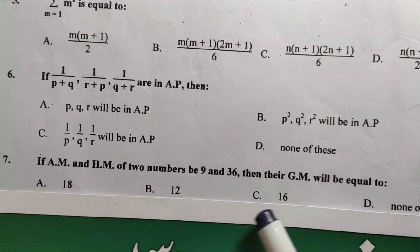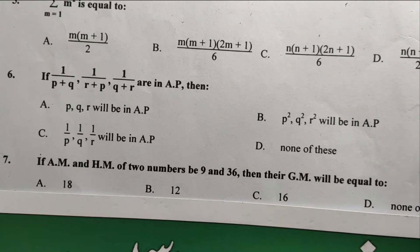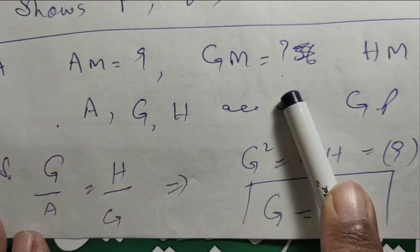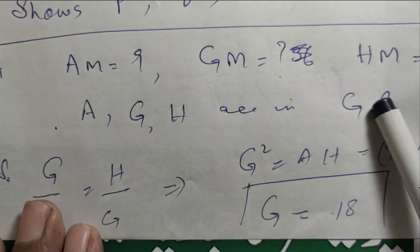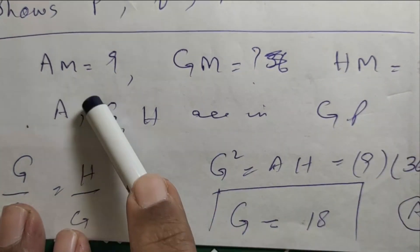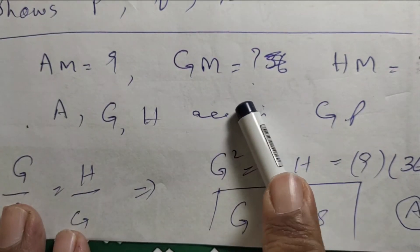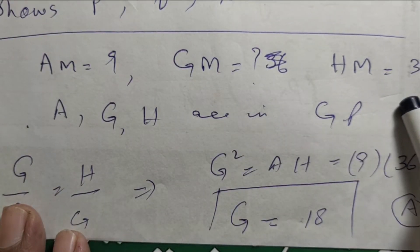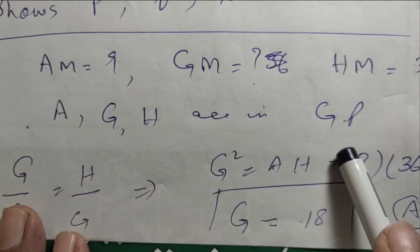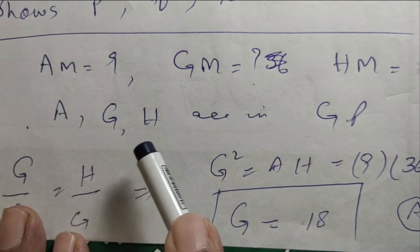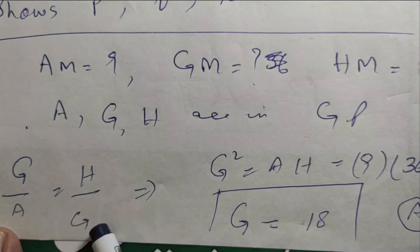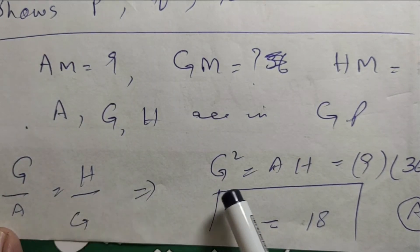We need to find the geometric mean. We have arithmetic mean as nine and harmonic mean as thirty-six. The arithmetic mean, geometric mean, and harmonic mean are in geometric progression — A, G, H are in GP. Second divided by first equals third divided by second, so G squared equals A times H.